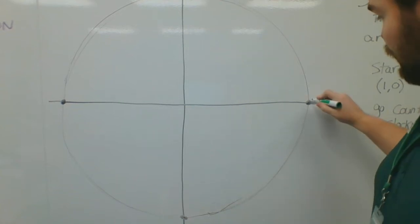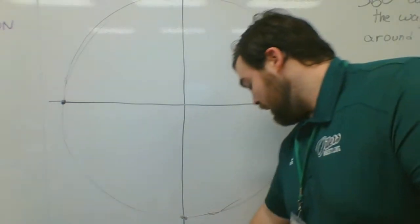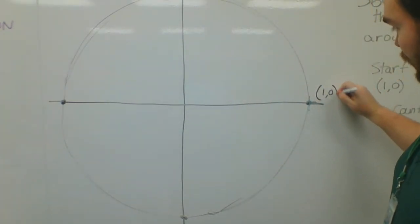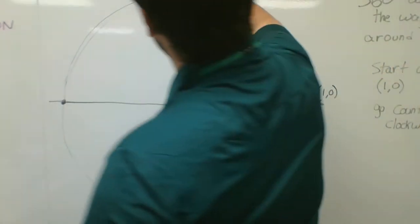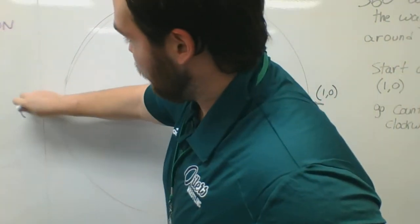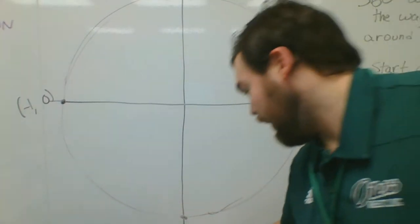These come up to 1. So this would be, for example, the ordered pair (1,0). This would be (0,1). This would be (-1,0), and this would be (0,-1).